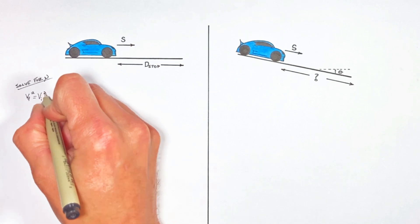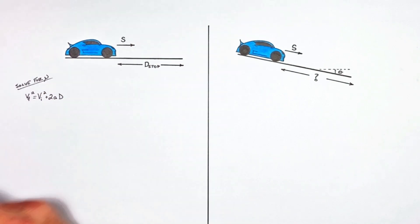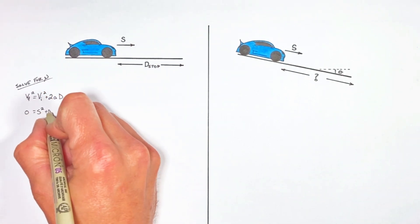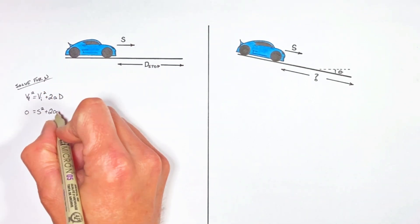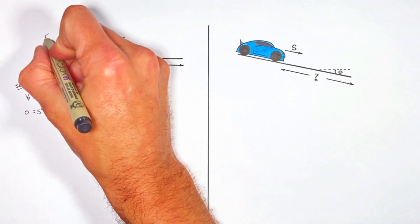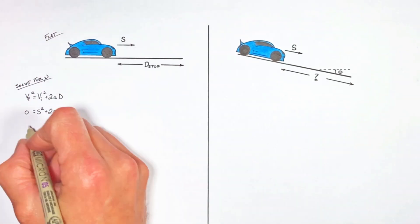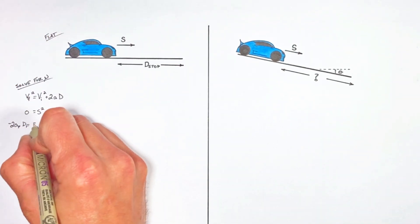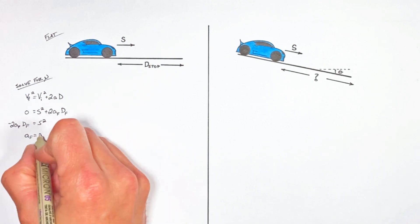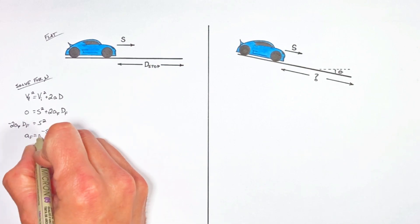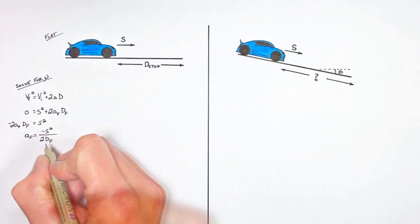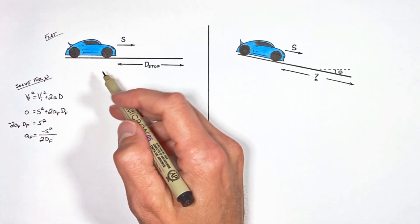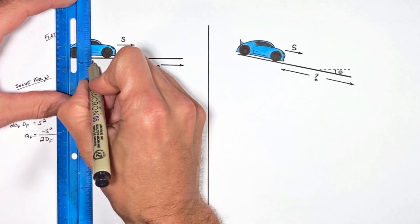Using the kinematic equation vf² = vi² + 2ad, and substituting in the initial speed of the car as well as the stopping distance, we can solve for the acceleration of the car. And knowing the acceleration, we can turn to force in order to solve for the coefficient of friction between the tires and the road.